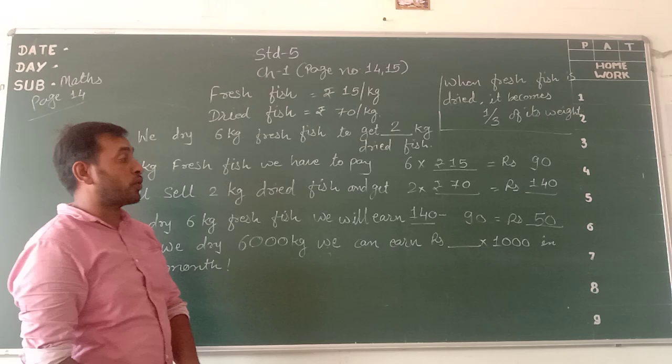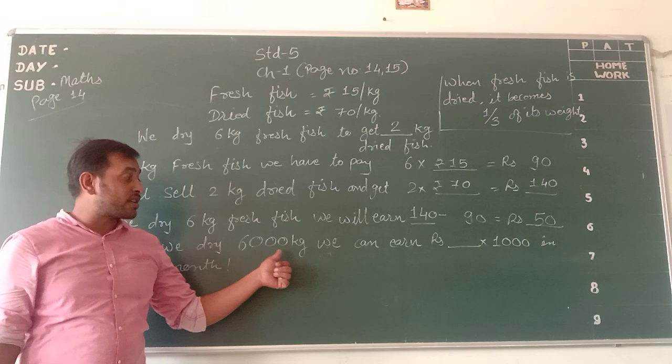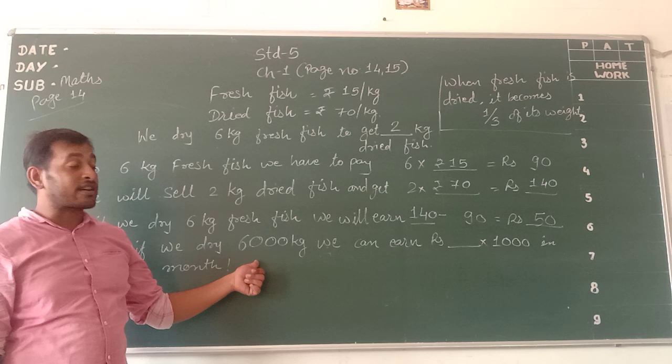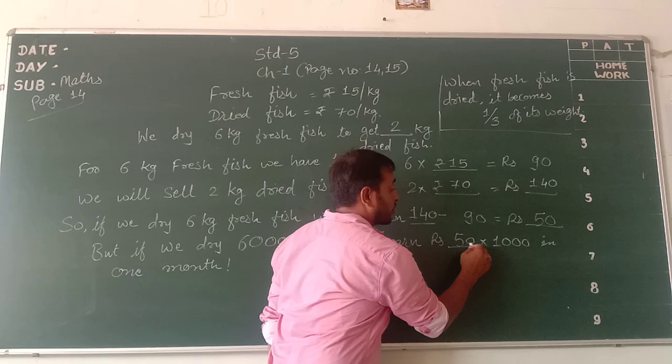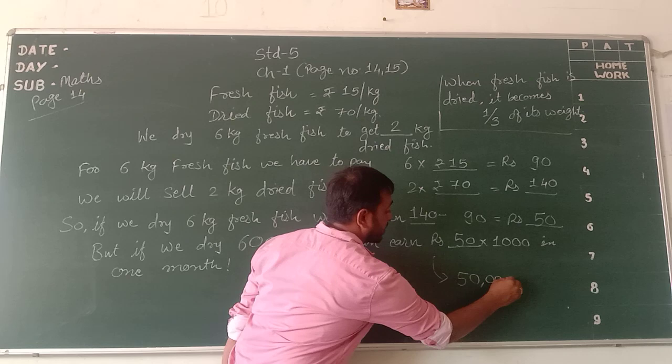But if we dry 6,000 kg — when we first have 6 kg and earn 50 rupees of profit — then if we dry 6,000 kg, that will become more than 50,000 rupees profit.